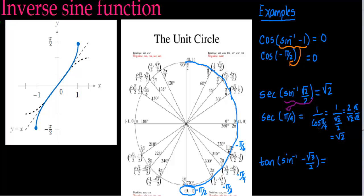We usually memorize the sine and cosine for the special angles. You might also want to memorize the tangents, secants, and cosecants. If you don't have them memorized, you have to calculate them each time. The answer to this example is √2.